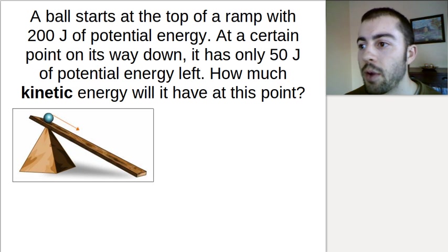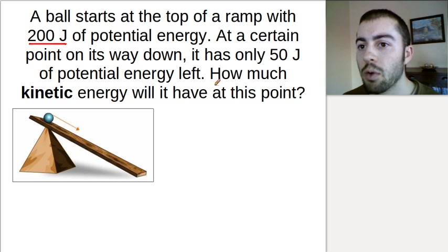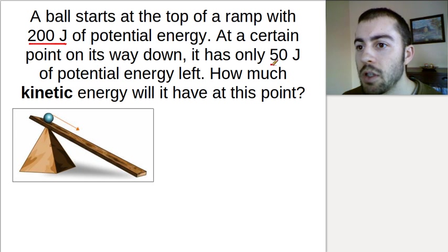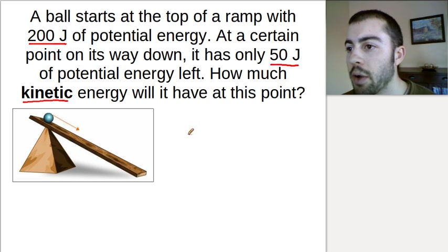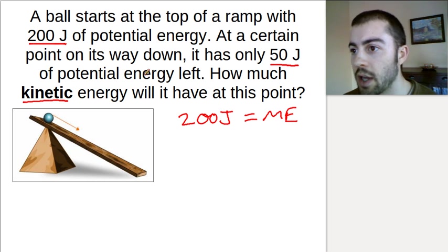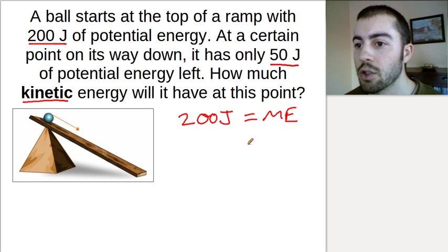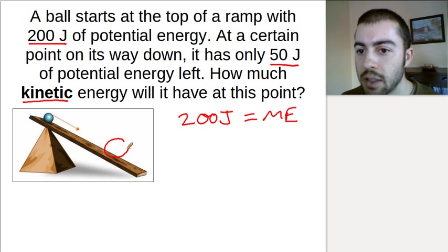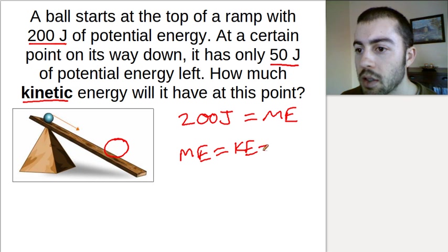One last question: if we have a ball at the top of the ramp with the same 200 joules of potential energy and it rolls down — maybe halfway down the ramp — and it has 50 joules of potential energy left, how much kinetic energy will it have at that point? We have 200 joules of mechanical energy to start, because we have 200 joules of potential and no kinetic energy — the same setup as the last question. If it has only 50 joules of potential energy somewhere down the ramp, we know the mechanical energy equals the kinetic plus the potential.